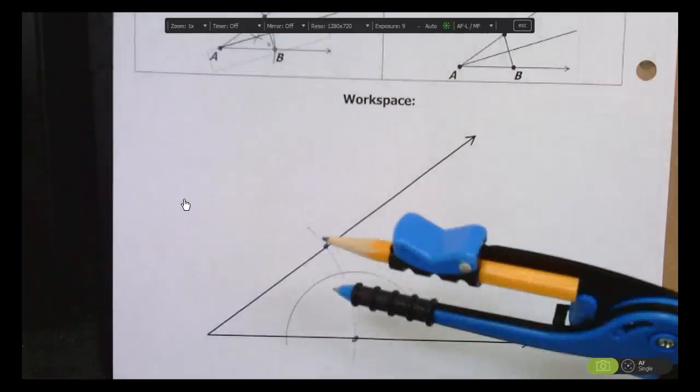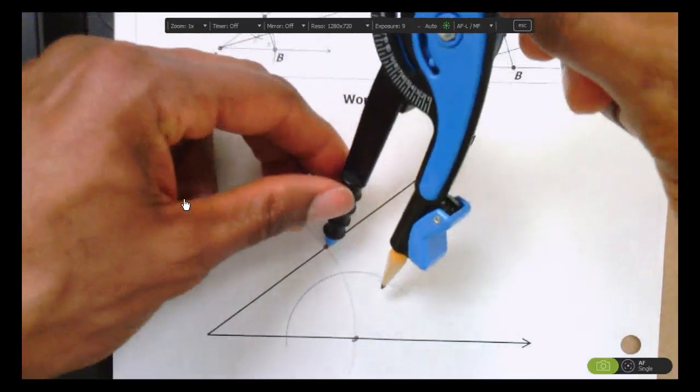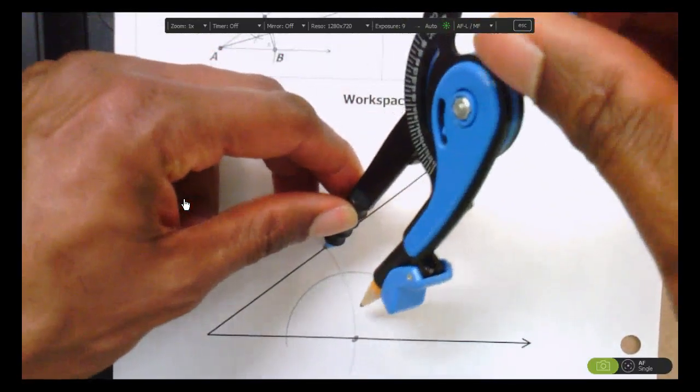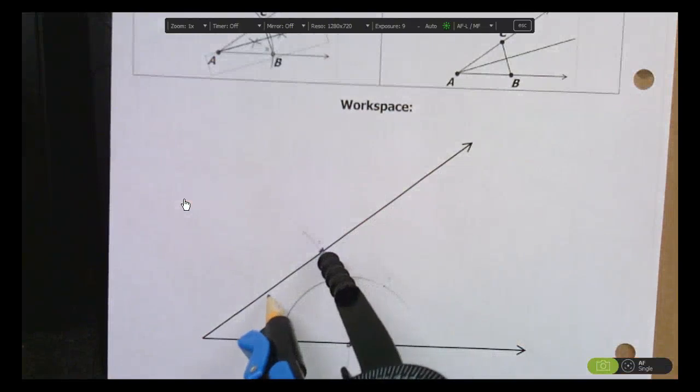And then you just move your compass to the other intersection point and you draw another arc intersecting.